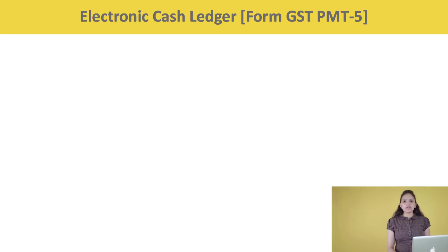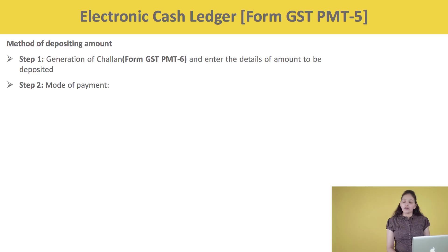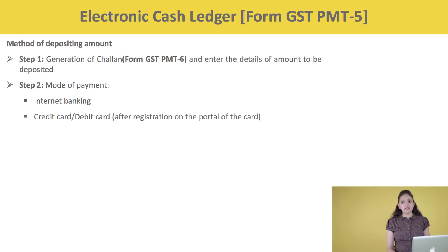The method of depositing cash involves four steps. Step 1: Generation of a Chalan in form GST PMT 6 — enter the details of the amount to be deposited. Step 2: Select the mode of payment. There are four modes prescribed: first, internet banking; second, credit card or debit card after registration on the portal.